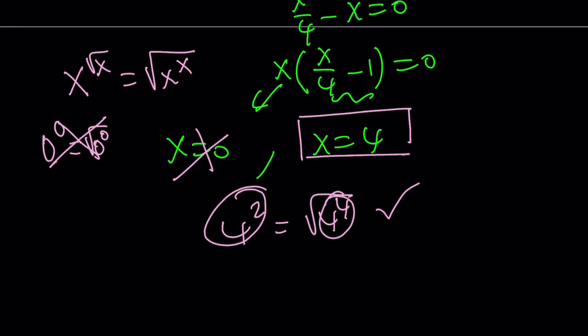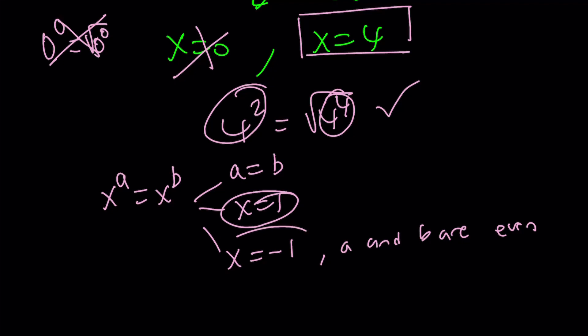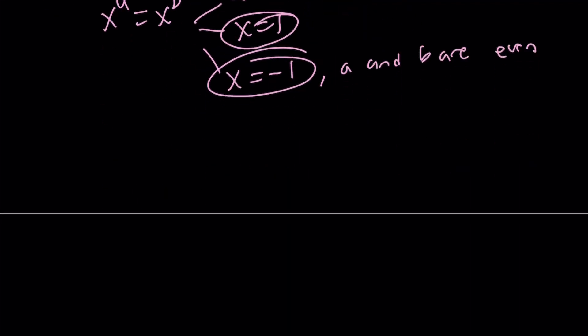But are those the only solutions? No. We still have to check something else. When you have x^a = x^b, you know that a could equal b, which is something we went through already, or we could have x = 1, or we could have x = -1, but in this case a and b are both even, otherwise we're going to run into problems. We still have to check these two cases to see if they are possible solutions.